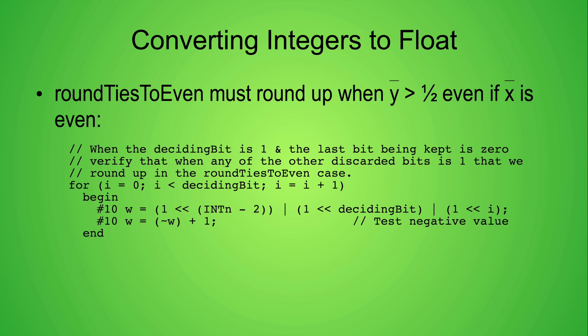The last set of tests verifies that for the round ties to even rounding mode, we always round the significand up when yBar is greater than one half, even when xBar is even.